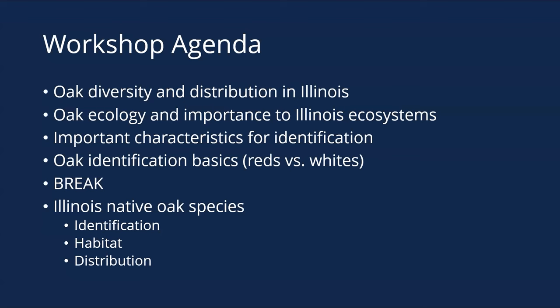This workshop covers all the oaks in Illinois. We'll start with diversity and distribution of oaks worldwide and in Illinois, then oak ecology and their importance to ecosystems, followed by general tree identification characteristics and what to look for with oaks specifically — including how to tell red oaks from white oaks. That section should take about 50 minutes to an hour, then a quick break with Q&A. After that, we'll go species by species through all native Illinois oaks — their identification, habitat, and distribution across the state.